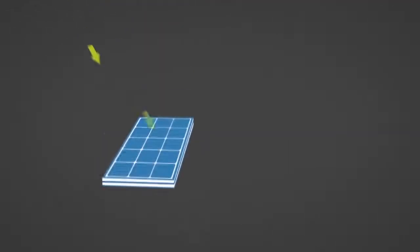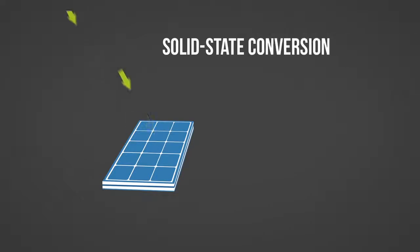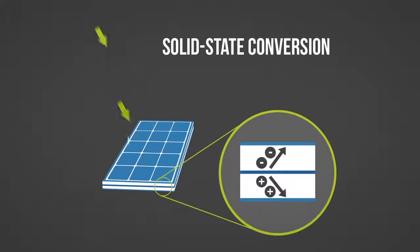Finally, electricity can be created through solid state conversion where electricity is generated using the structure and properties of a solid. The specially constructed solid consists of different molecules packed closely together that create an electric current when stimulated. An example of a technology that utilizes solid state conversion is a solar PV cell.